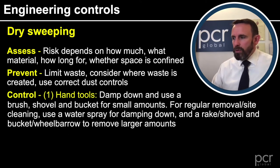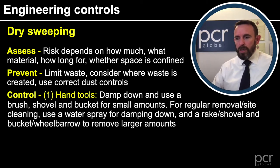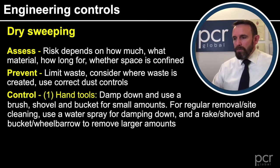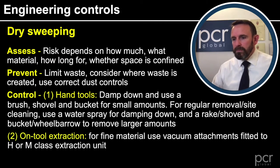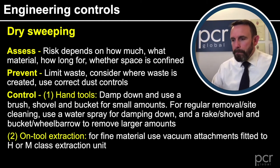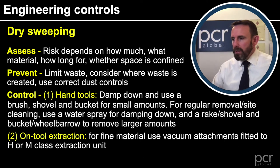Looking at the controls: number one, hand tools — we could damp down and use a brush, shovel, and bucket for small amounts. For regular removal or site cleaning, we could use a water spray for damping down, and then a rake and shovel, and a bucket and wheelbarrow to remove larger amounts. We can also use on-tool extraction for sweeping, and for fine materials we could use a vacuum attachment fitted to an H or M — so a high or medium class extraction unit.